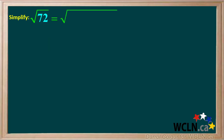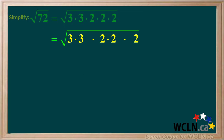72 can be factored to the prime numbers 3 times 3 times 2 times 2 times 2. If you multiply these numbers together, you can see their product equals 72. We'll spread these out a bit and circle the pair of 3's and the pair of 2's. We always circle pairs of identical prime numbers when simplifying square roots.